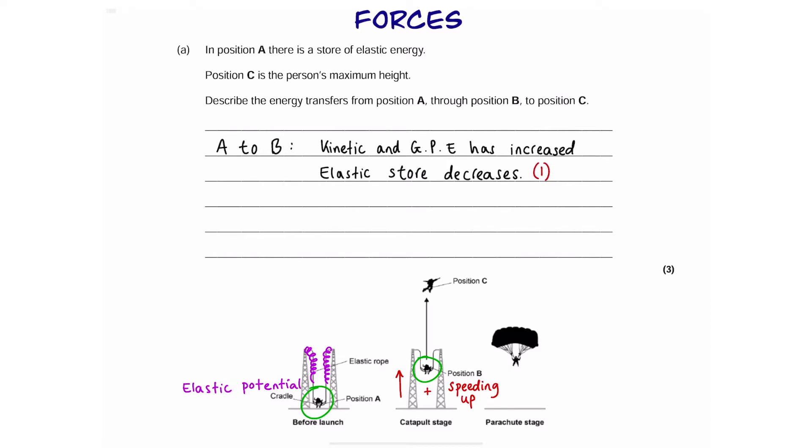So, all of that is one mark. Now, from B to C, we can see that the person has gone higher. However, we know that when you throw something up, it doesn't get faster. In fact, it slows down because of gravity. Whatever goes up must eventually come down unless you're sending something into orbit.